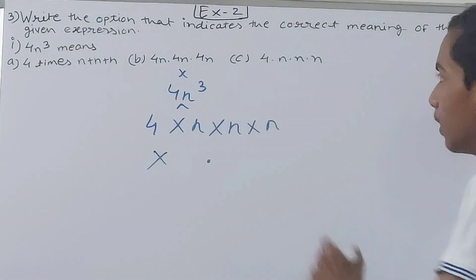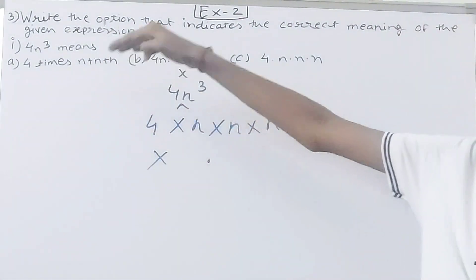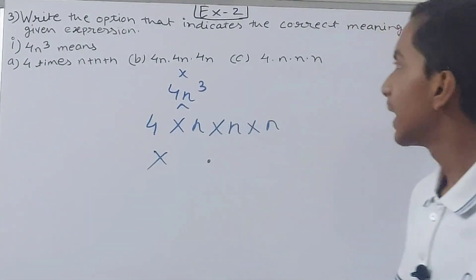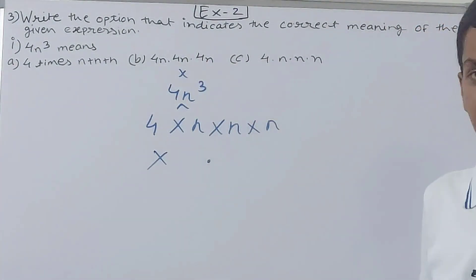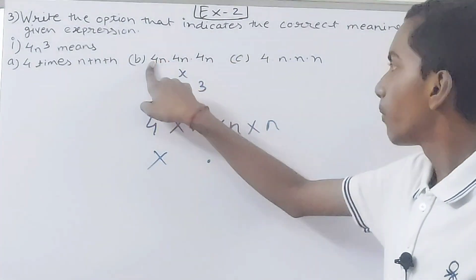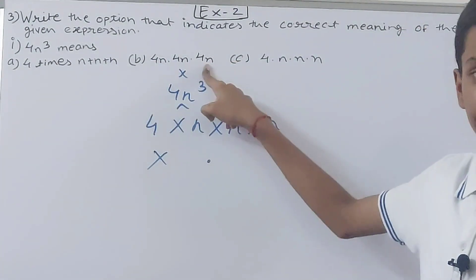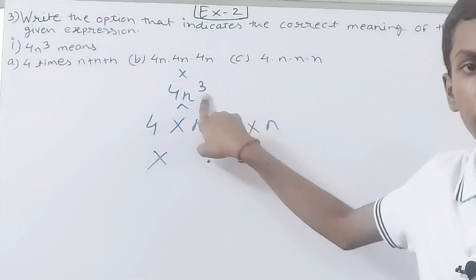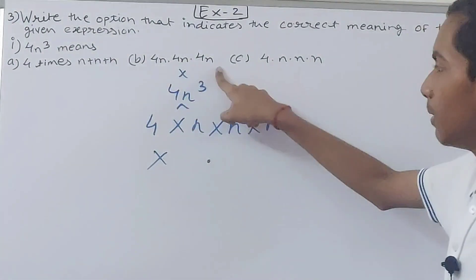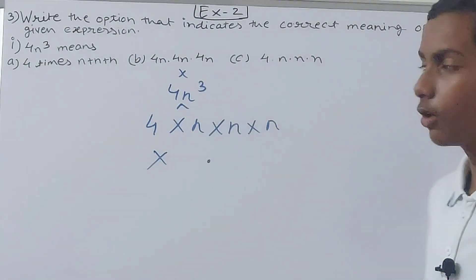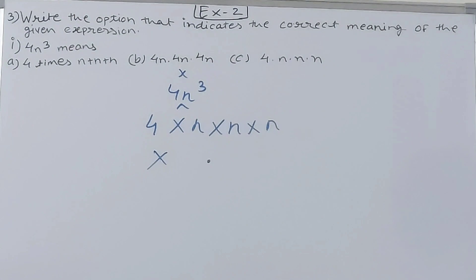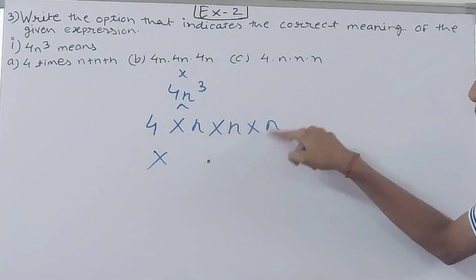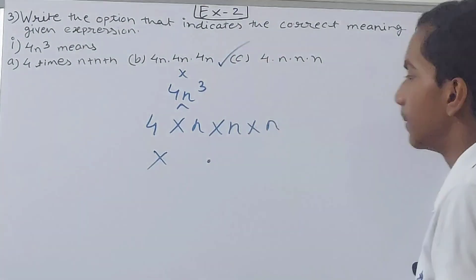Note that multiplication can also be shown with a dot. Looking at the options: Option A is 4 times n plus n plus n — there is a plus sign, so that is not correct. Option B is 4n into 4n into 4n — here 4 is being repeated three times, but 3 is only the exponent for n, not for 4, so this is also wrong. Option C is 4 into n into n into n, which is correct — that's Option C.